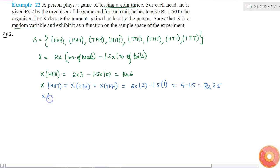Similarly, X of HTT is equal to X of THT is equal to X of TTH because in all these three cases, there are two tails and one head. So, this is equal to 2 times 1 minus 1.5 times 2. This is equal to 2 minus 3 which will be minus 1 rupee.